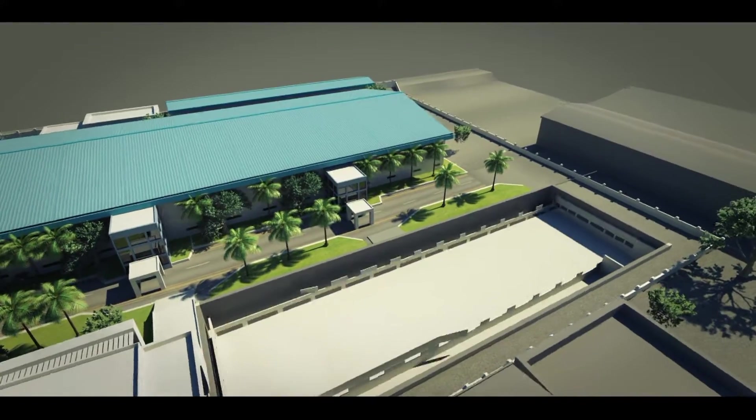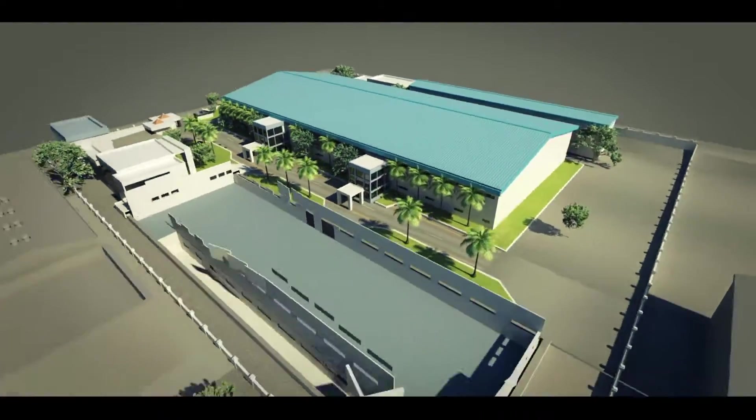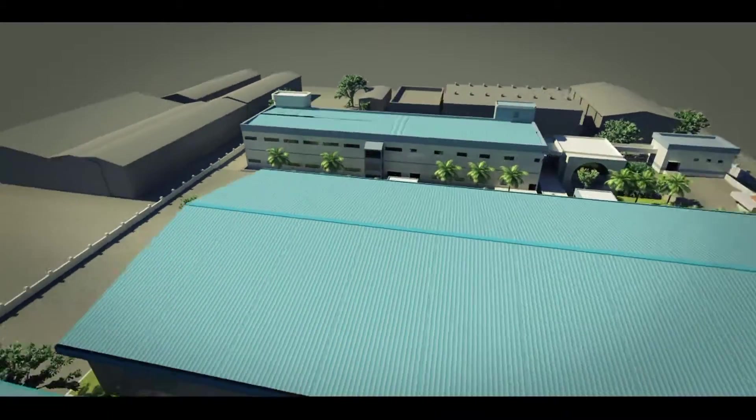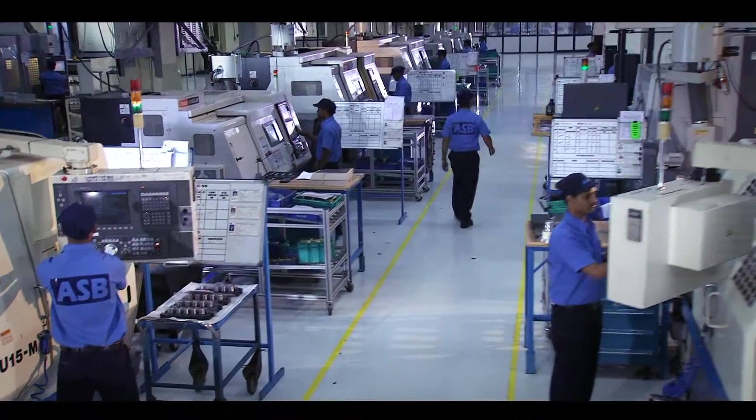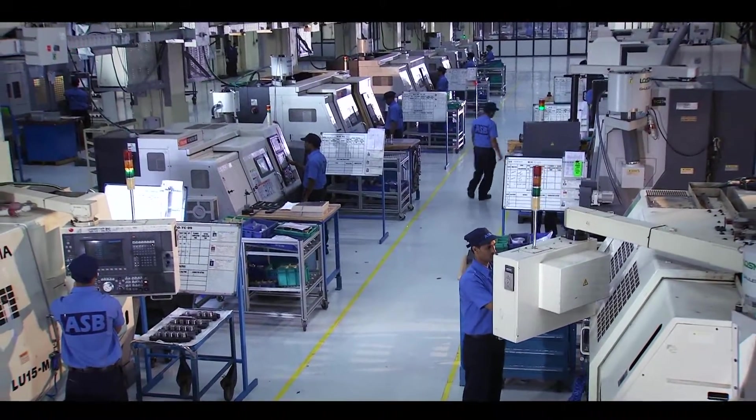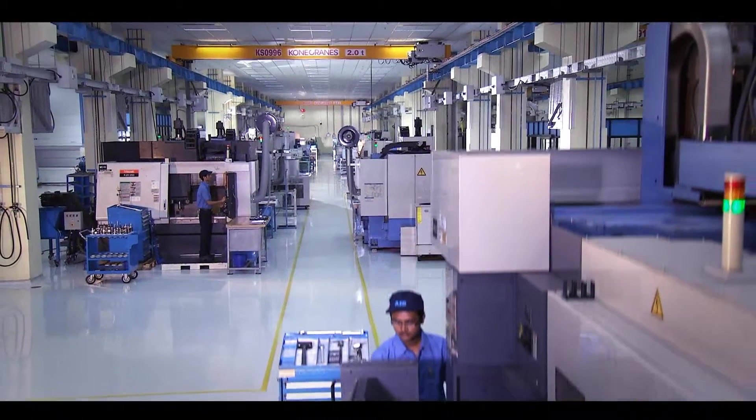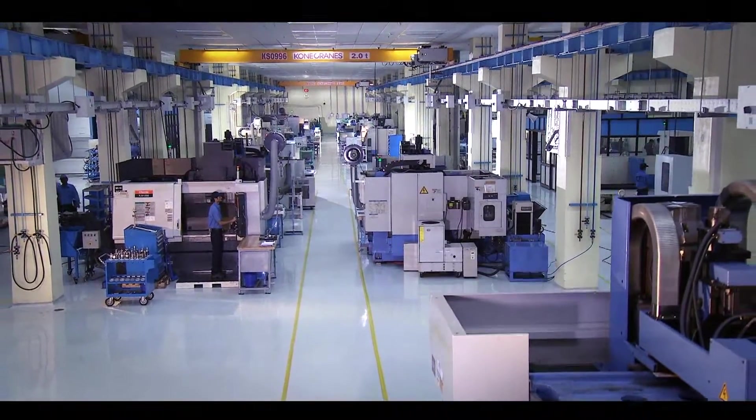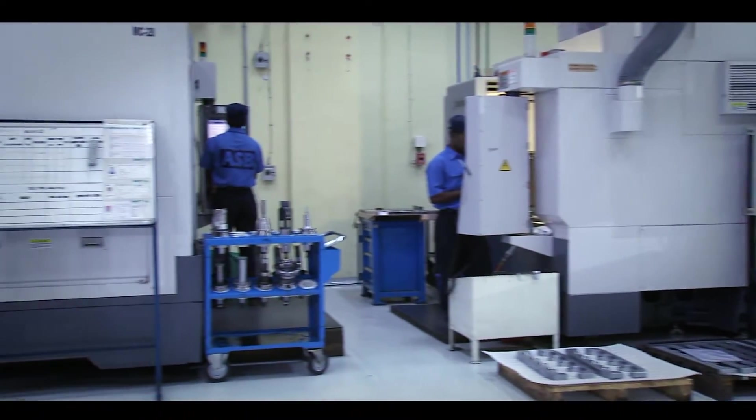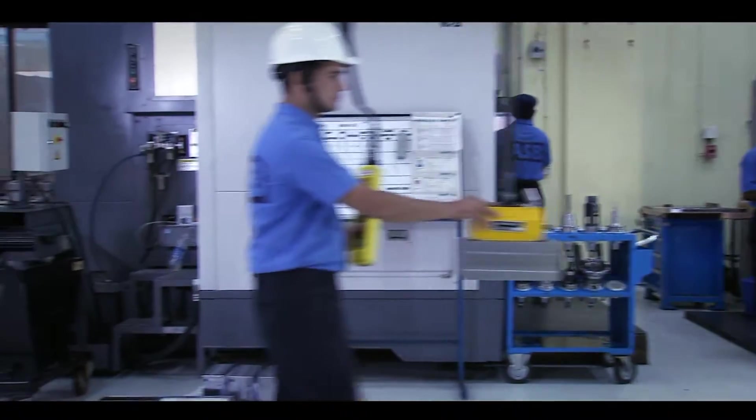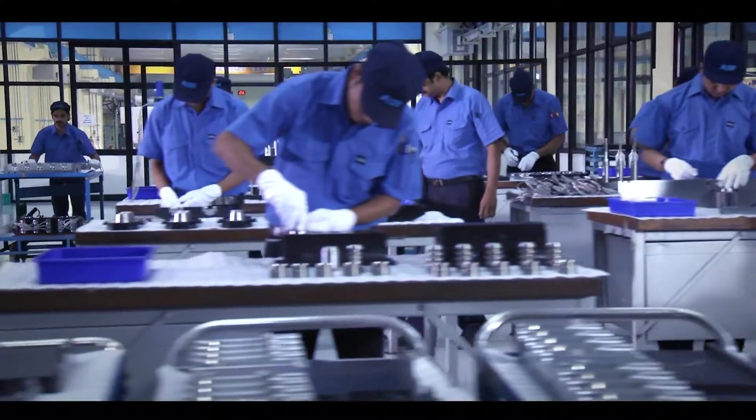In 2011, ASB embarked on a long-term expansion plan that has culminated in the creation of a brand-new state-of-the-art factory dedicated to mould manufacturing. This sophisticated, high-precision plant has enabled ASB to double its mould manufacturing capacity.